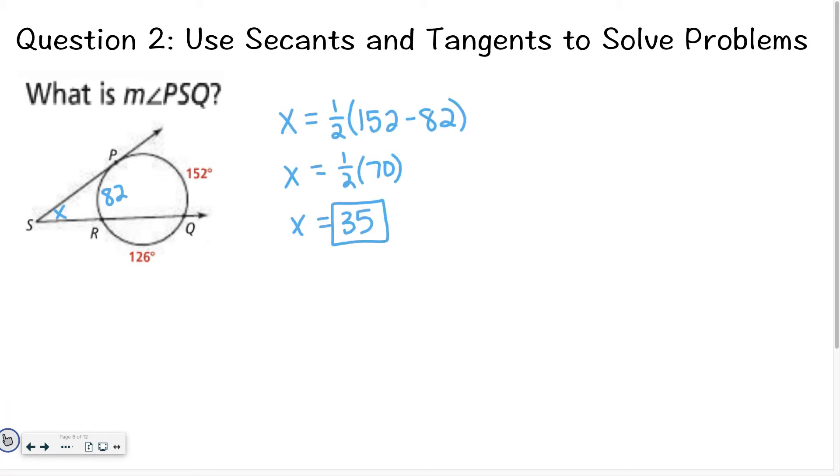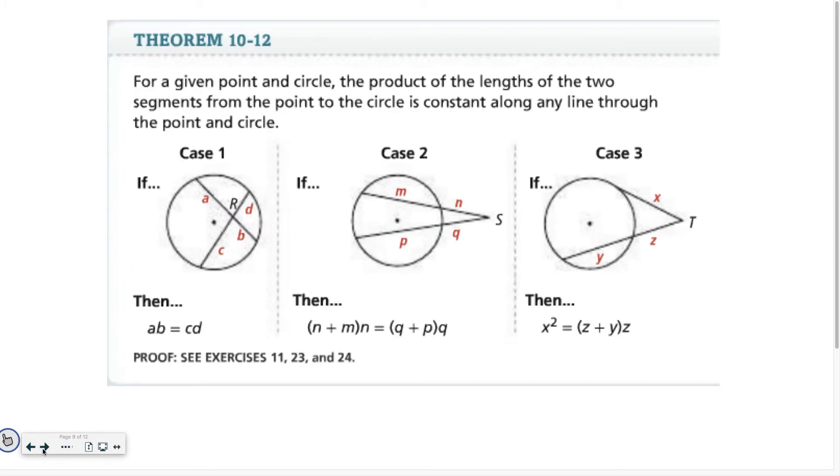Okay, for this problem, hopefully you realized we were solving for the angle that was outside of the circle. So you said that was x or whatever variable you want and you said equals one half the larger arc minus the smaller arc. And since we didn't know what the smaller arc was, I took the entire circle, I subtracted 152 minus 126 and that's how I got that 82 right there. Then I plugged the 152 and the 82 into the formula. I said x equals one half times the quantity of 152 minus 82 and that is 70. So one half of 70 is 35. If you have questions about that, don't hesitate to ask for some help.